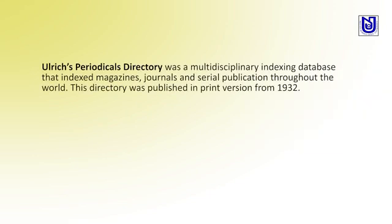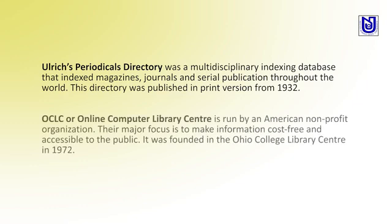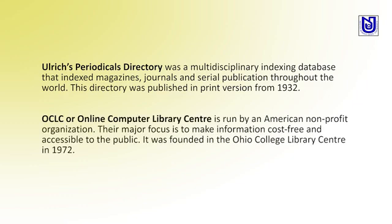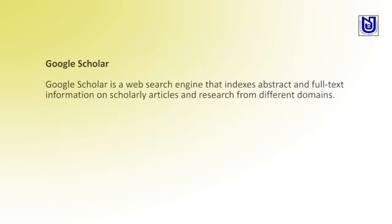Ulrich's Periodicals Directory, the Martin City Index from 1932, is a database that indexes magazines, journals, and serial publications throughout the world. This directory has been published since 1932. Libraries used to refer to Ulrich's before buying any serial periodicals. OCLC, the Online Computer Library Center, is run by an American non-profit organization whose major focus is to make information cost-free and accessible to the public. Google Scholar is a web search engine that indexes abstracts and full-text information on scholarly articles and research from different domains.